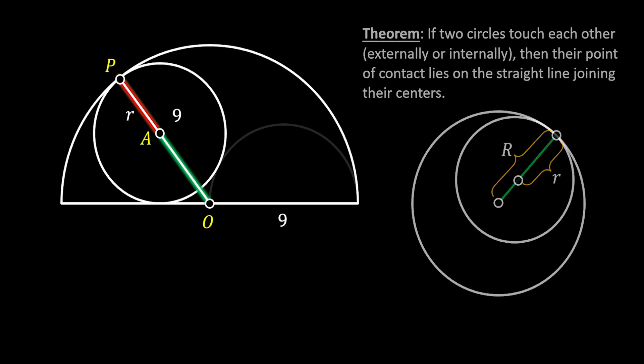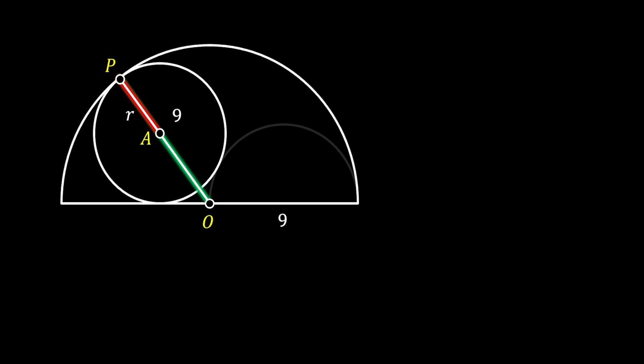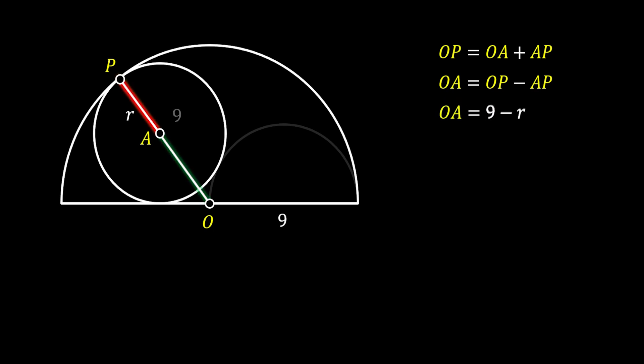With this in mind, we can easily calculate the segment AO from the sketch. We know that the line OP equals the line OA plus the line AP. So we can calculate AO as the difference between the two radii of our circles, which gives us 9 minus R.